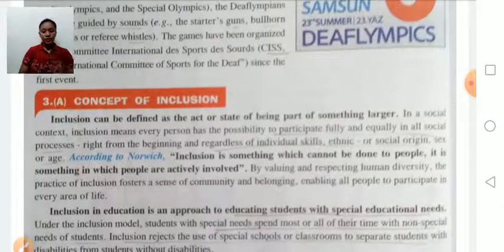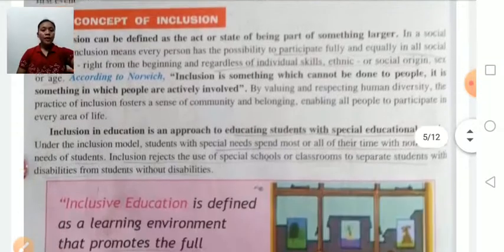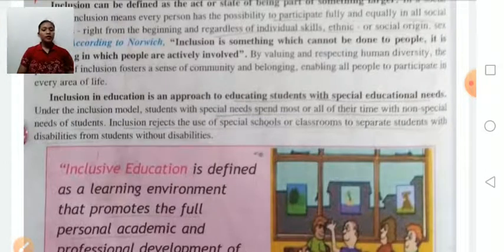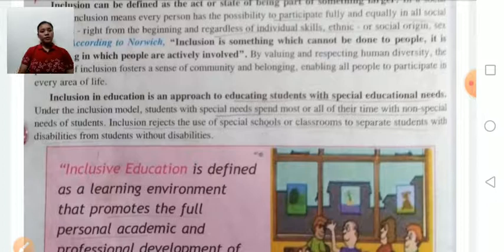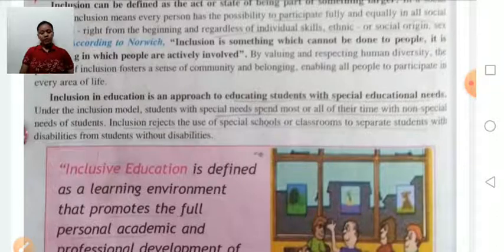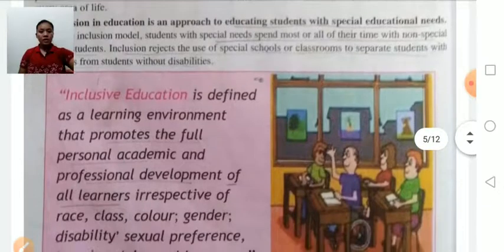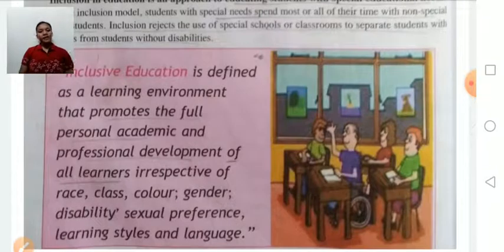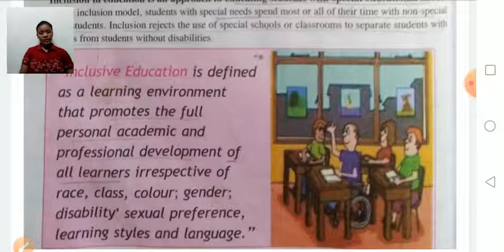Inclusion in education is an approach to educating students with special education needs — meaning educating both disabled and non-disabled students under the same roof. This inclusion in education promotes full personal, academic, and professional development of all learners, regardless of race, class, color, gender, disability, sexual preference, learning styles, and language.